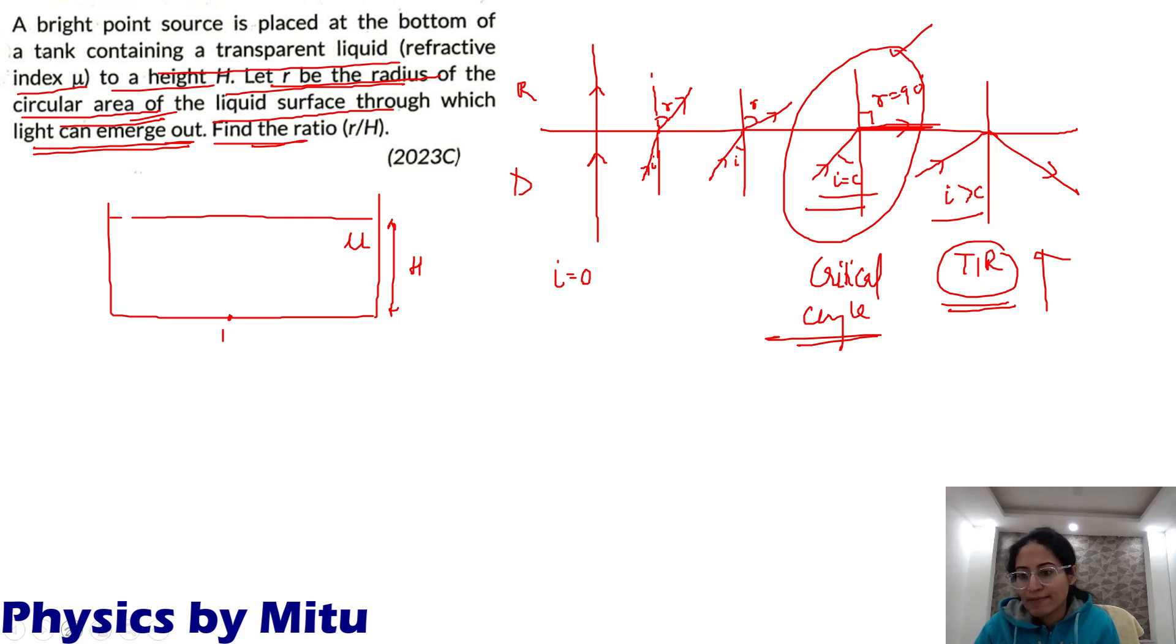Let us apply the same concept here. This is the point source. From here we draw a normal incidence. The ray of light goes like this. As we increase I, angle of refraction increases. Increase I further, R will increase. At a certain angle of incidence, angle of refraction becomes 90. This angle of incidence is called critical angle.